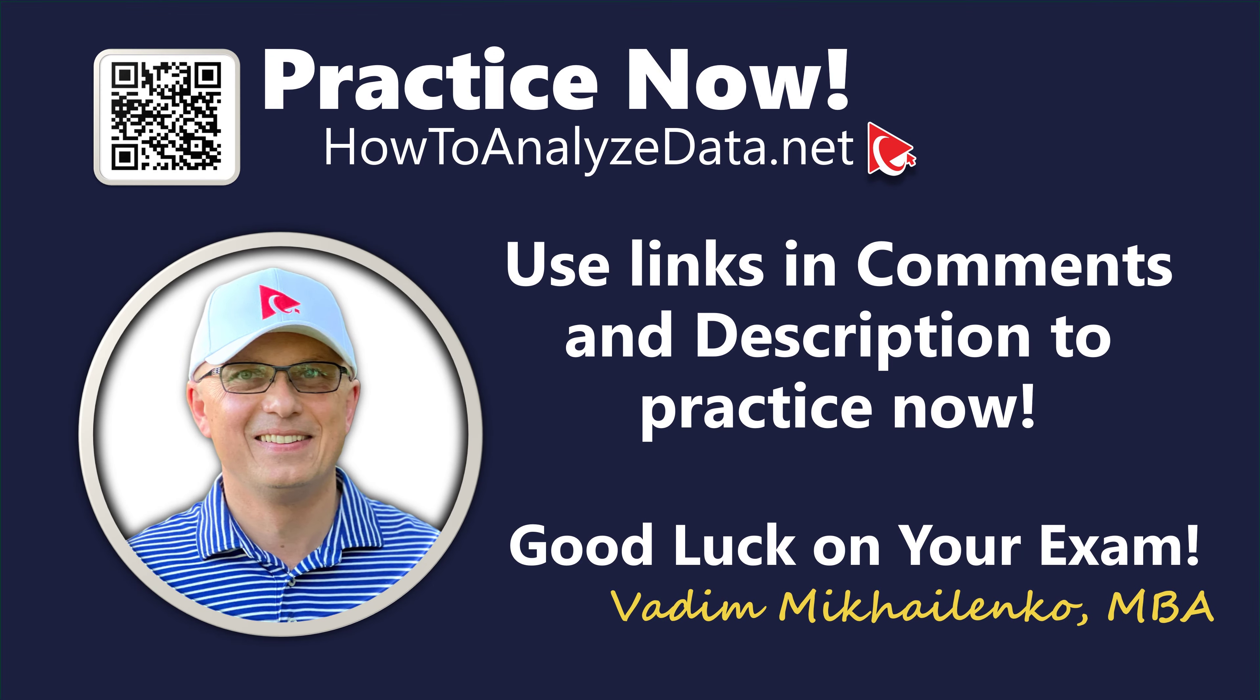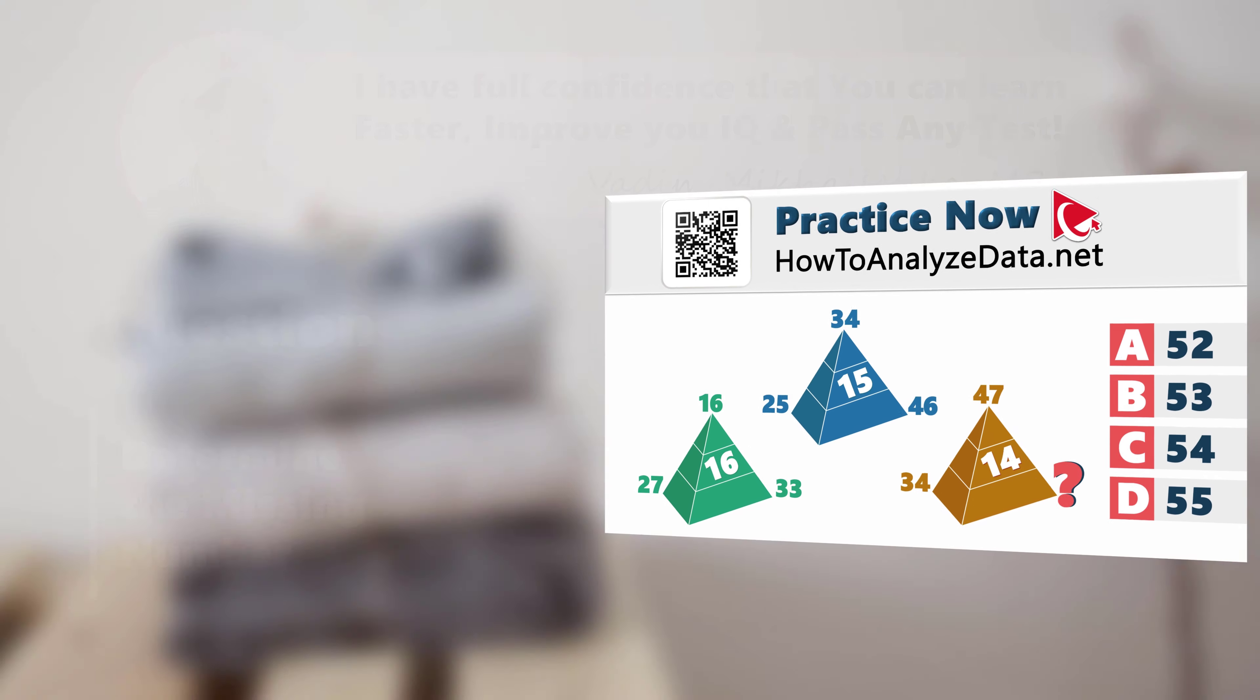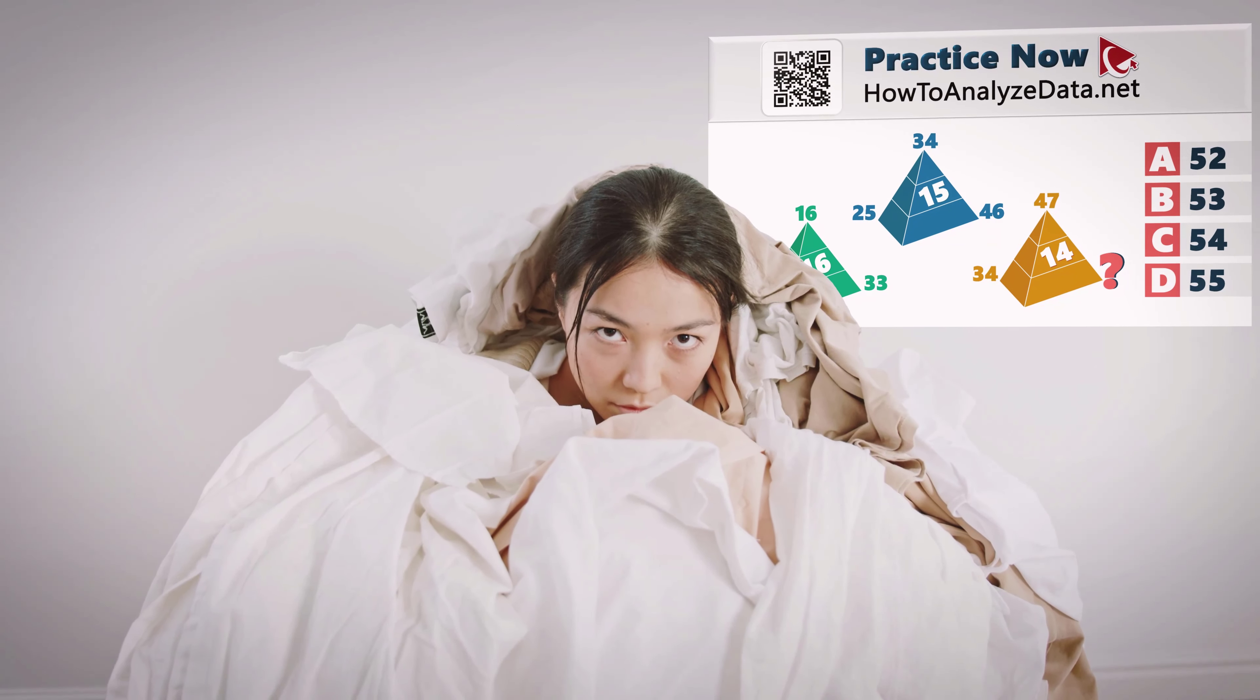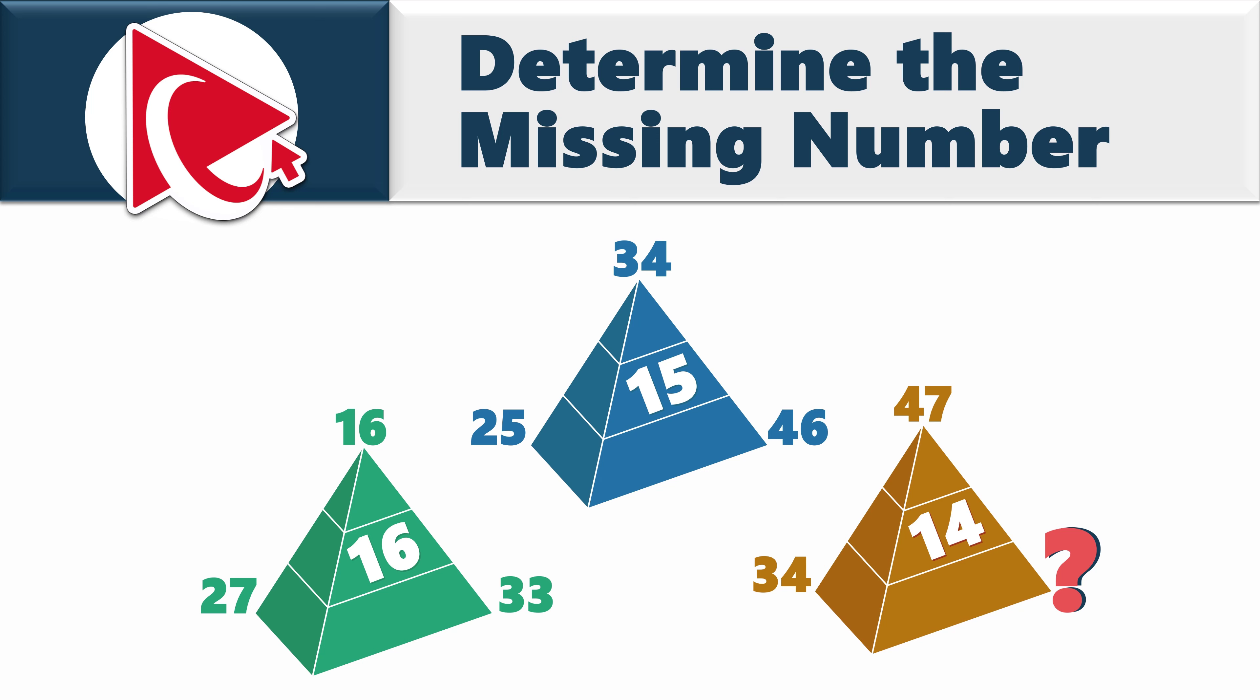This particular test question is so tricky. It's like trying to fold a fitted sheet perfectly. You think you've got it, but it ends up crumpled mess and nobody has the answer. You're presented with three pyramids. Each pyramid has three numbers on the outside and one number inside. In the first pyramid, the numbers are 27, 16, and 33 and the inside number is 16.